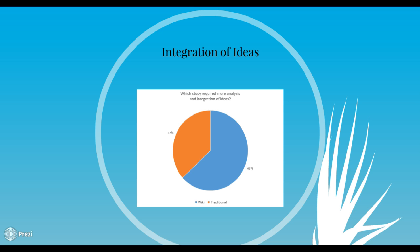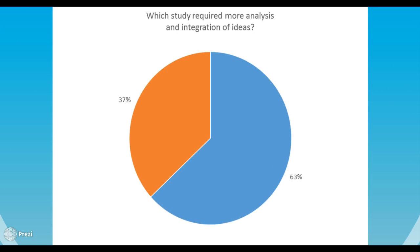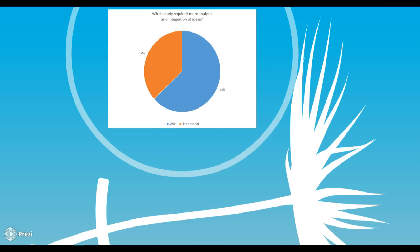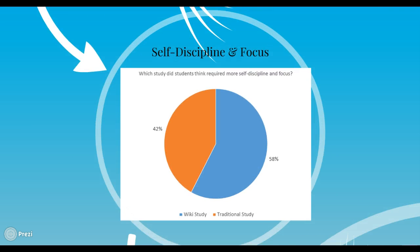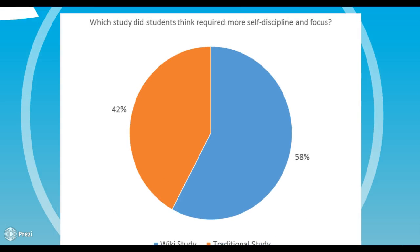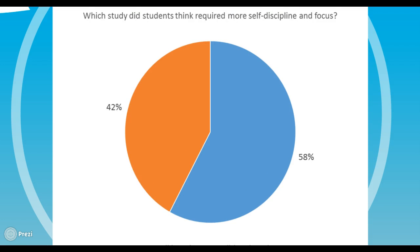Next, I looked at the rigor of the two treatments. In this slide, you can see that 63% said that the wiki study required more analysis and integration of ideas than the traditional study. As far as self-discipline and focus, 58% said that the wiki study required more.